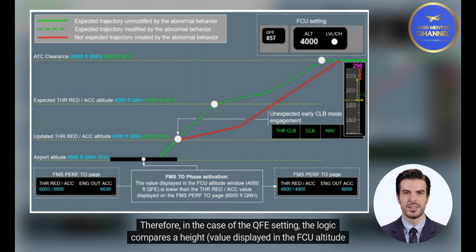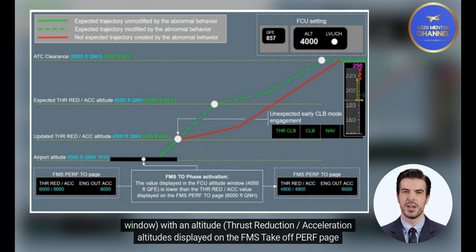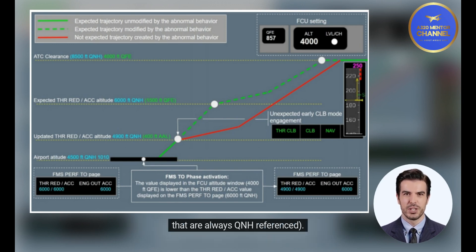The logic compares a height, value displayed in the FCU altitude window, with an altitude: thrust reduction/acceleration altitudes displayed on the FMS takeoff PERF page that are always QNH referenced.